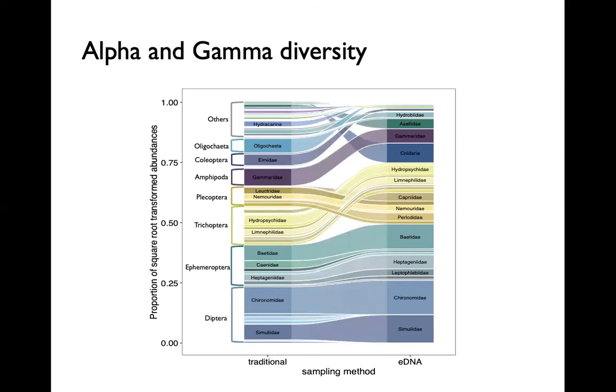Among the most frequent ones were also groups with high indicator scores in the biotic index, such as the orders of Ephemeroptera, Trichoptera and Plecoptera.